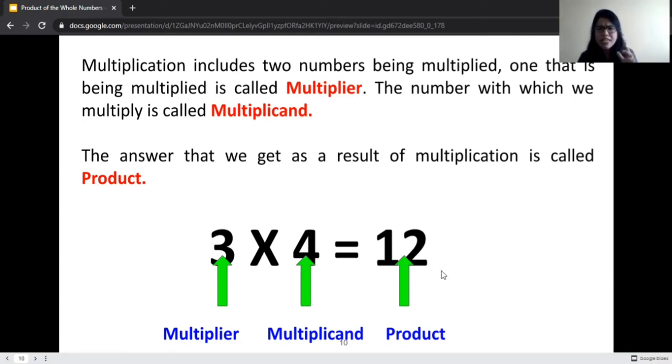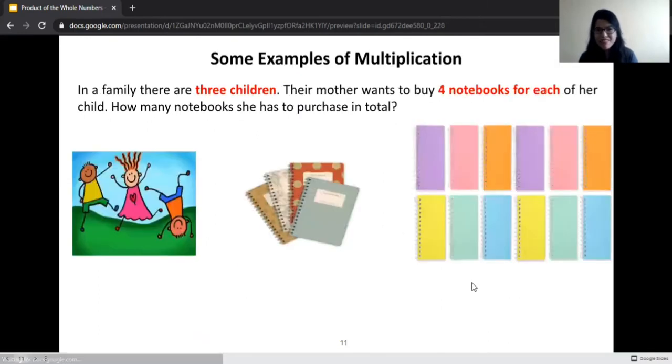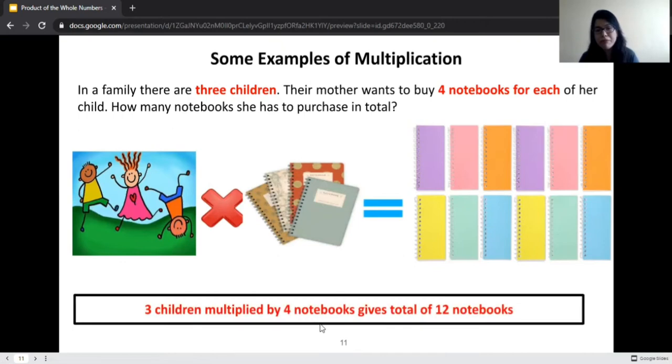Now let us take this very simple example. Here, 3 multiplied by 4 is equal to 12. Here 3 is the multiplier, 4 is the multiplicand, whereas 12 is the product. Wasn't that easy? Here is another simple example of multiplication. Let us take another family in which there are three children. Their mother wants to buy four notebooks to each of her child. How many notebooks should she purchase? Are you going to do addition? No, we are going to multiply. Three kids multiplied by four books. In total they need 12 notebooks. Three children multiplied by four notebooks gives 12 notebooks. Wasn't that easy?